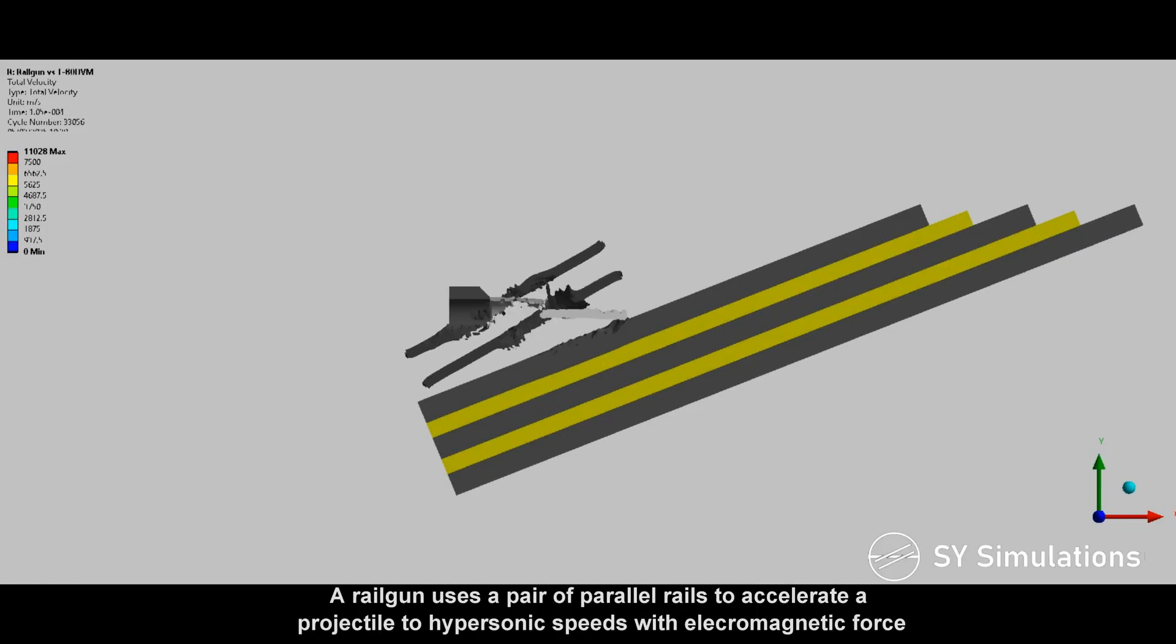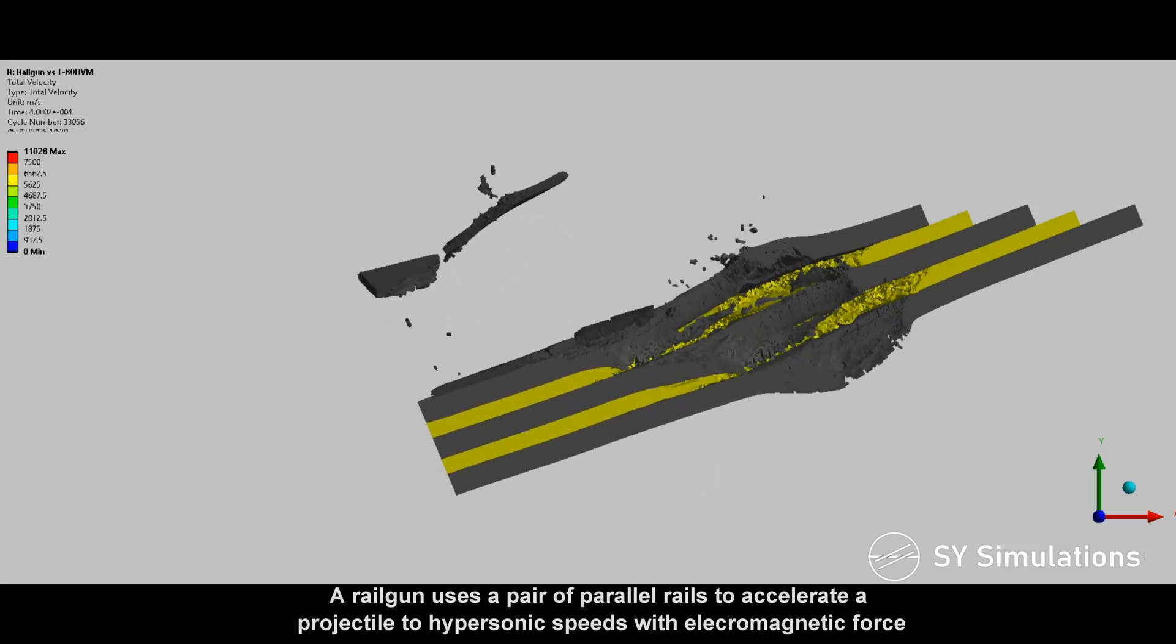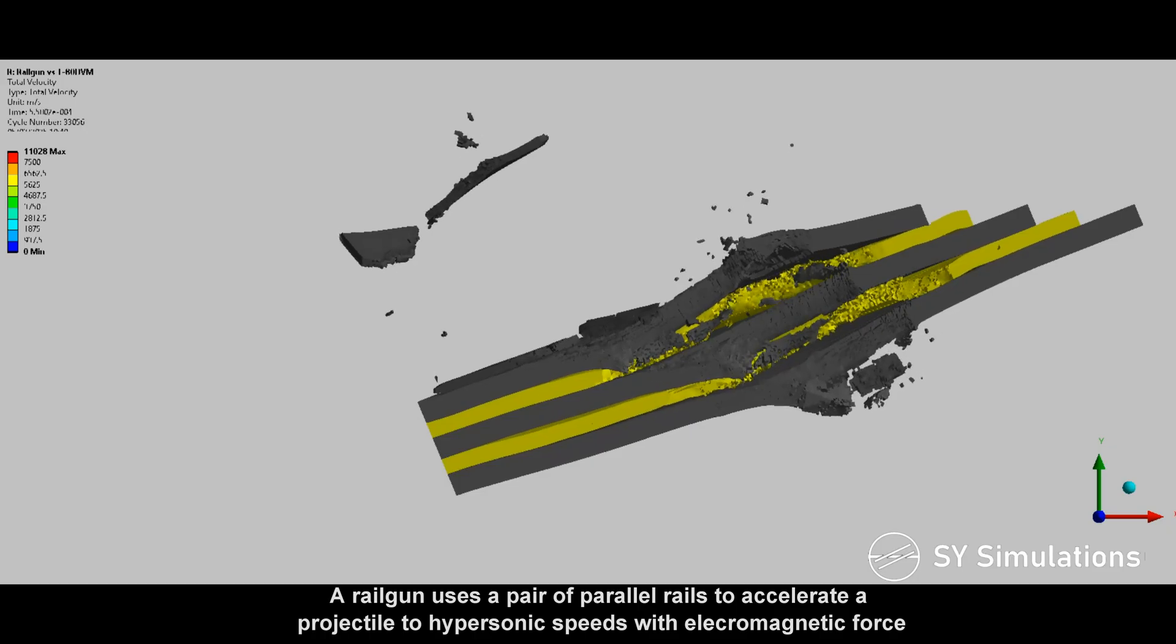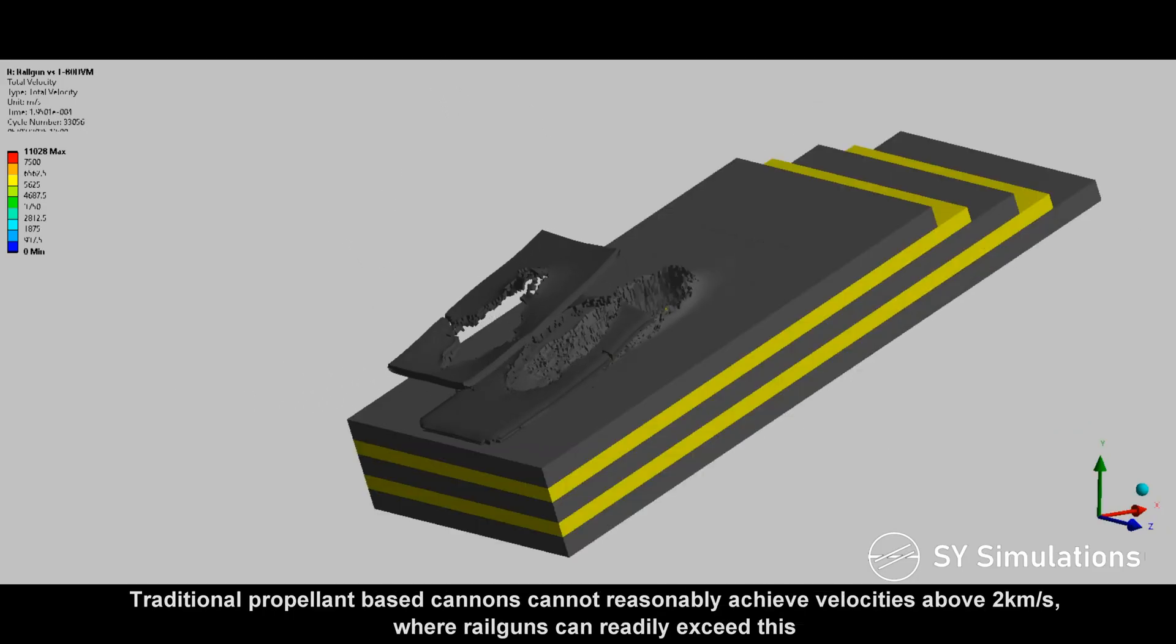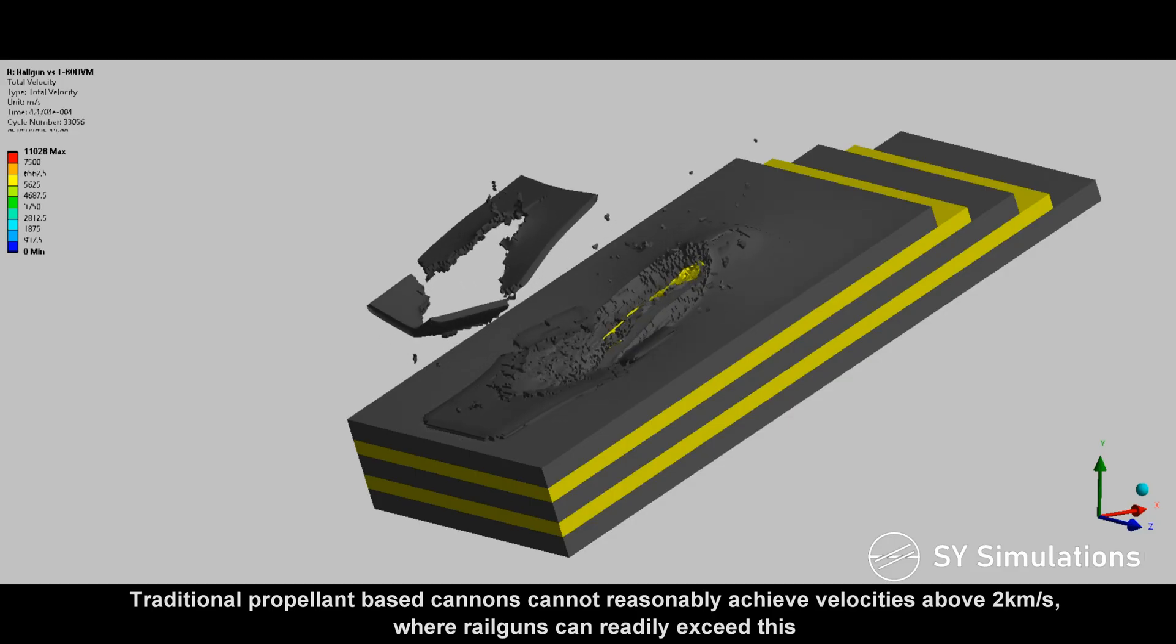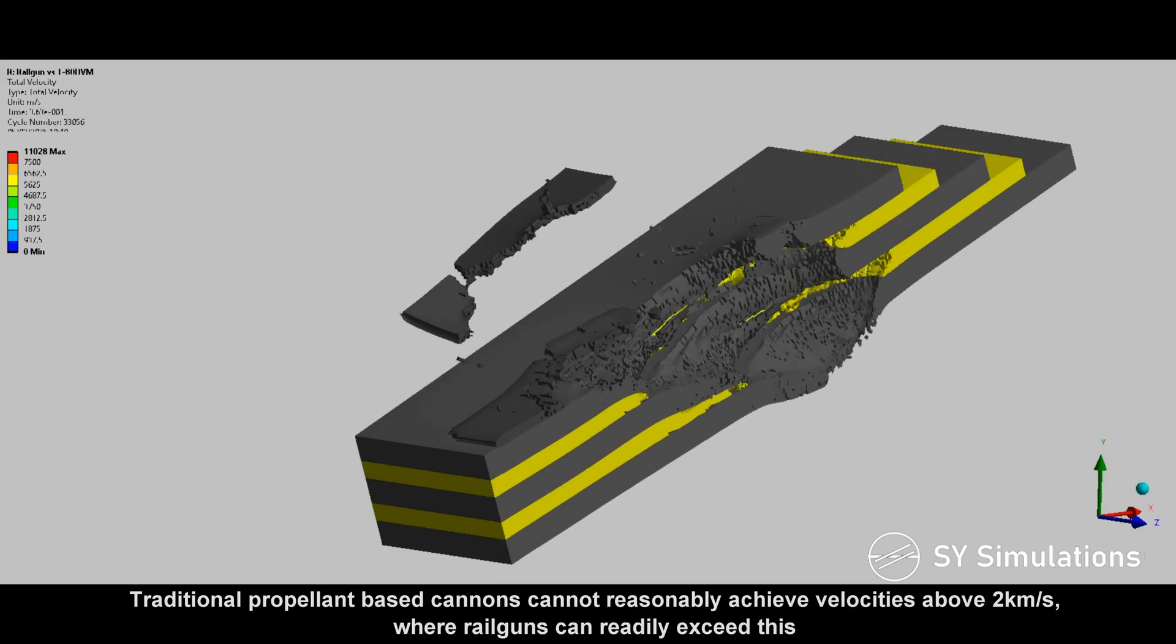A railgun uses a pair of parallel rails to accelerate a projectile to hypersonic speeds with electromagnetic force. Traditional propellant-based cannons cannot reasonably achieve velocities above 2 km per second, where railguns can readily exceed this.